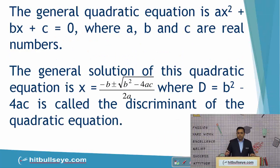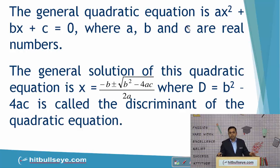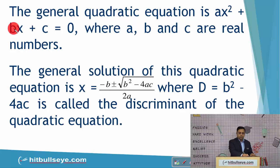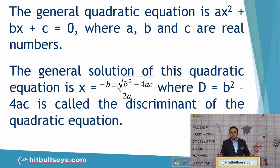Let us start with our session. The general quadratic equation is ax² + bx + c = 0, where a, b and c are real numbers. The general solution is given by x = (−b ± √(b² − 4ac)) / 2a. The term b² − 4ac is known as the discriminant of the quadratic equation. We can also solve a quadratic equation by factorizing it.